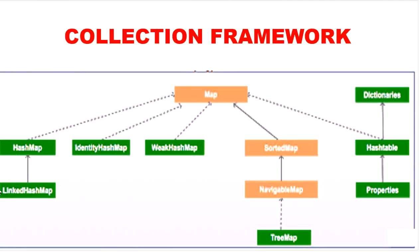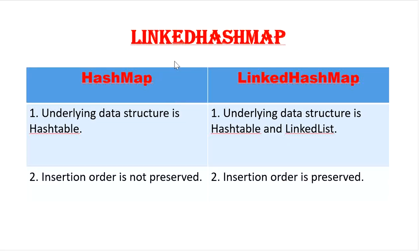The next one is LinkedHashMap. LinkedHashMap is the child class of HashMap and is exactly the same as HashMap but with a few differences. HashMap internally uses a hash table data structure, whereas LinkedHashMap internally uses both a hash table and a linked list. So insertion order is preserved in LinkedHashMap, but in HashMap insertion order is not preserved.